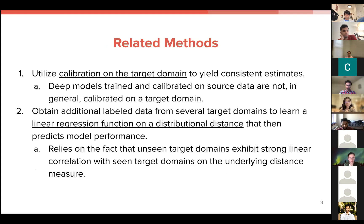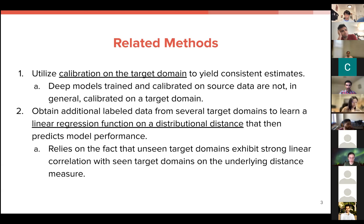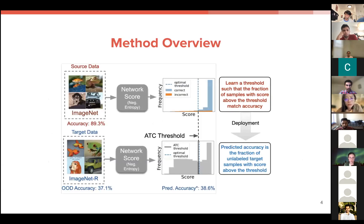Highlighting some related methods: previous methods have utilized things like calibration on the target domain with additional labels, or have made assumptions about a linear relationship between the target domain distributional distance and the source domain. However, in this paper, we do away with those assumptions and essentially say that we have labeled source data X and Y for training and validation, but we only have access to unlabeled target data.